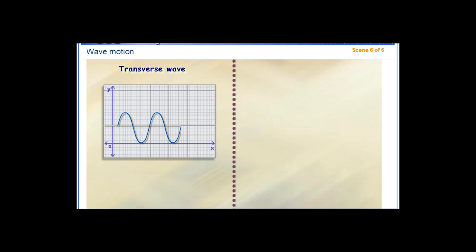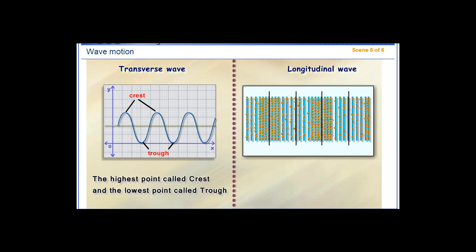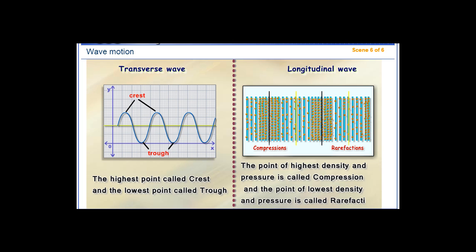The transverse wave can be represented by this graph. The highest point called crest and the lowest point called trough, while longitudinal wave can be represented by this figure. The point of highest density and pressure is called compression, and the point of lowest density and pressure is called rarefaction.